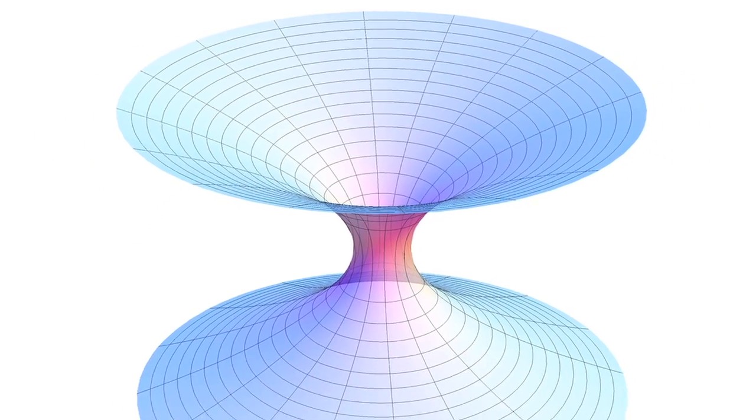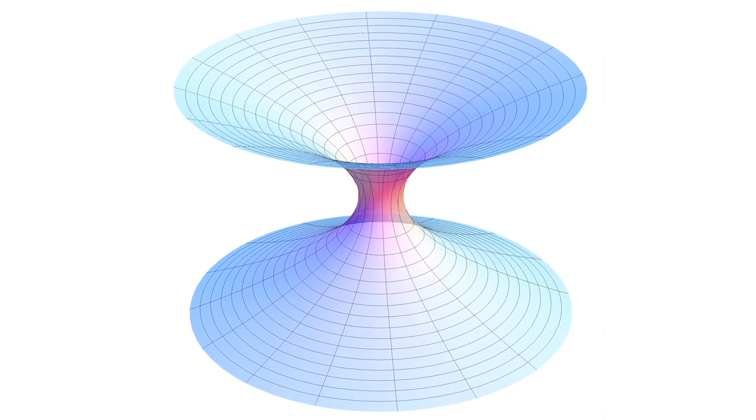They believe that time travel to the past could be possible using an Einstein-Rosen bridge, which also goes by the name wormhole.